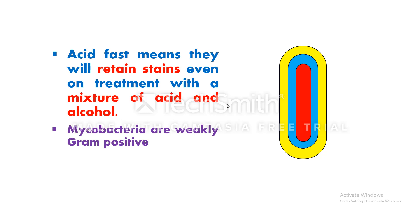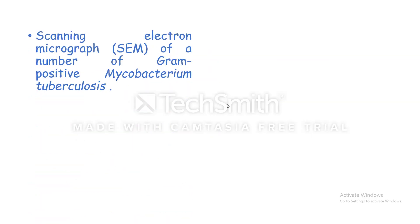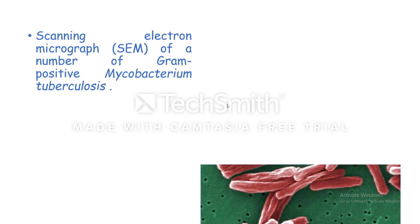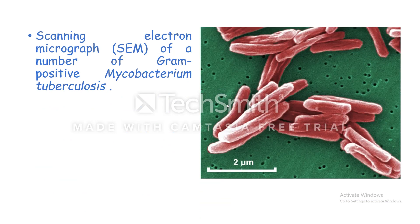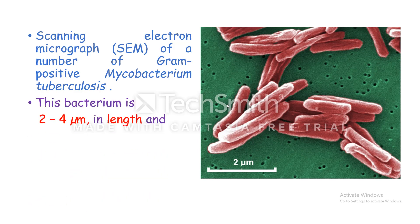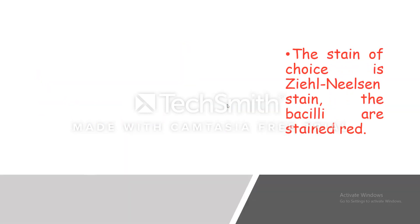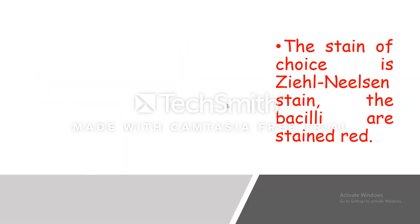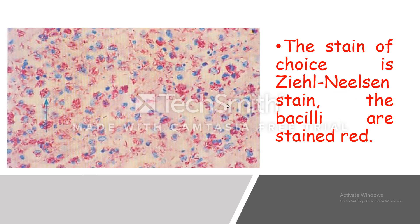Mycobacteria are weakly Gram-positive when stained with Gram stain, but it is very difficult to stain this way. On scanning electron micrograph, Mycobacterium tuberculosis appears 2 to 4 micrometers in length and 0.2 to 0.5 micrometers in width. The stain of choice is Ziehl-Neelsen stain, which stains the bacilli red.